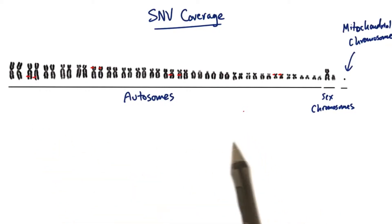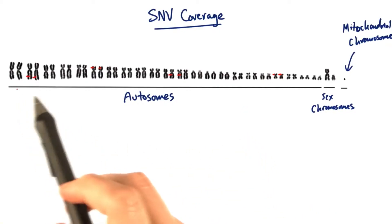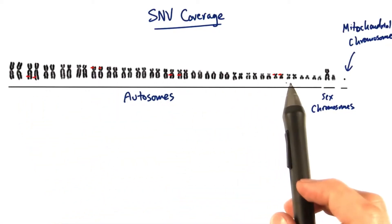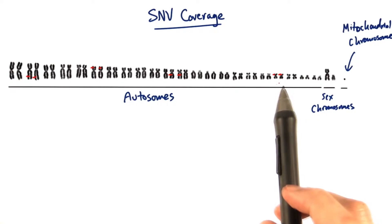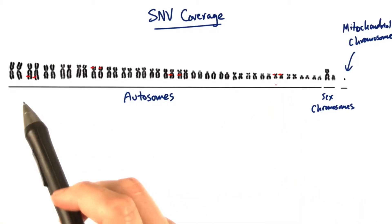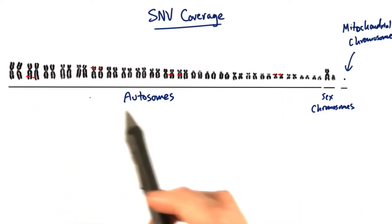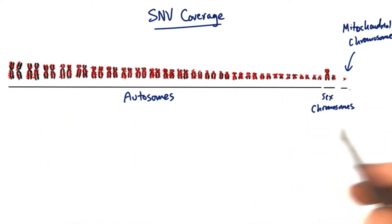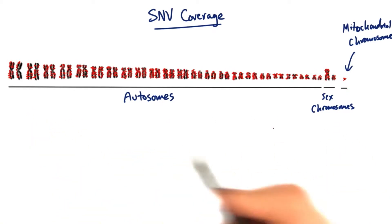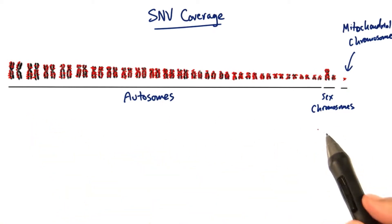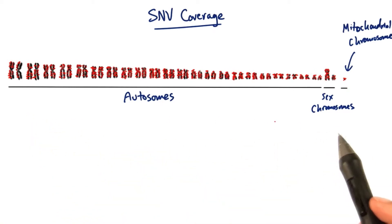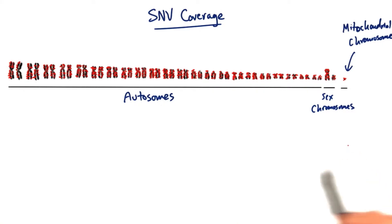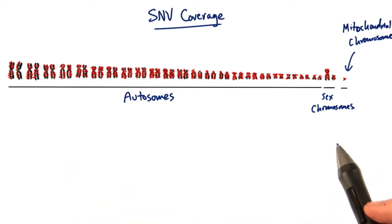In the last exercise, we only looked at four individual SNVs in the genome. But now let's imagine that we expand our comparisons from just four SNVs to one million SNVs across the genome. Then we have a lot more statistical power behind our numbers.